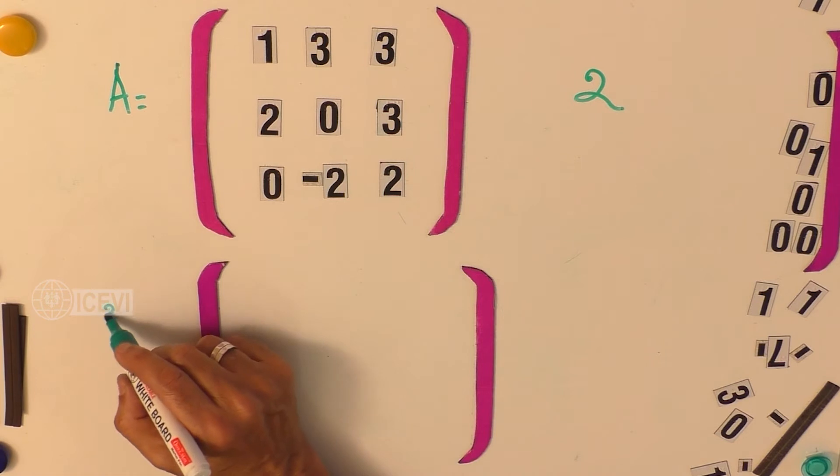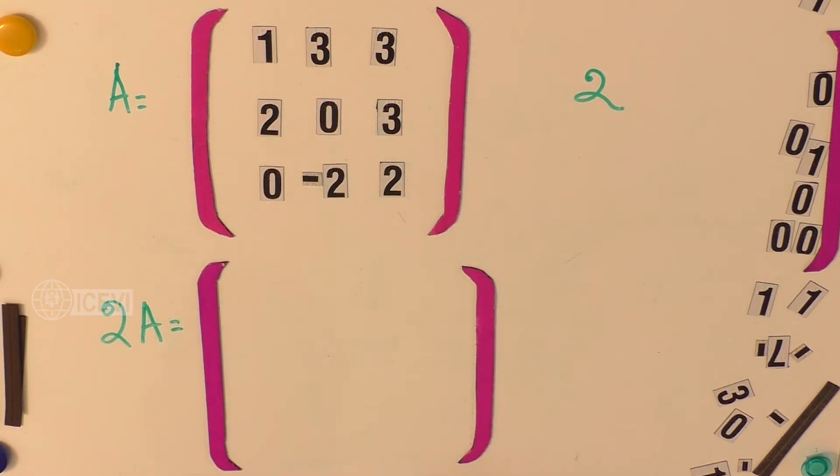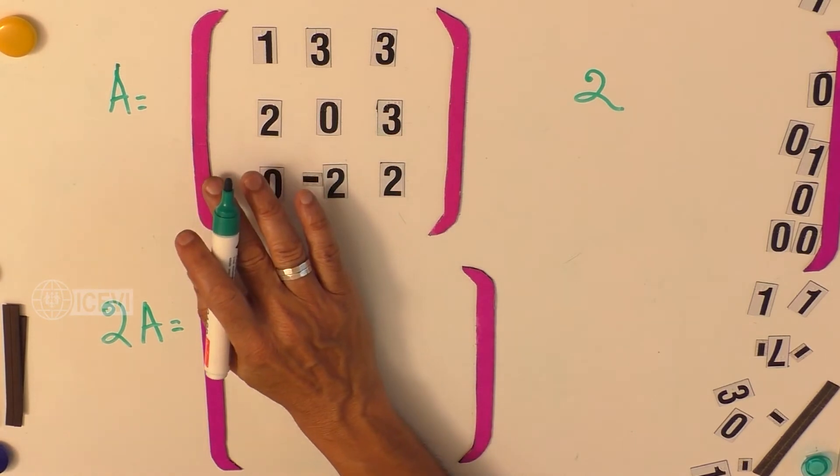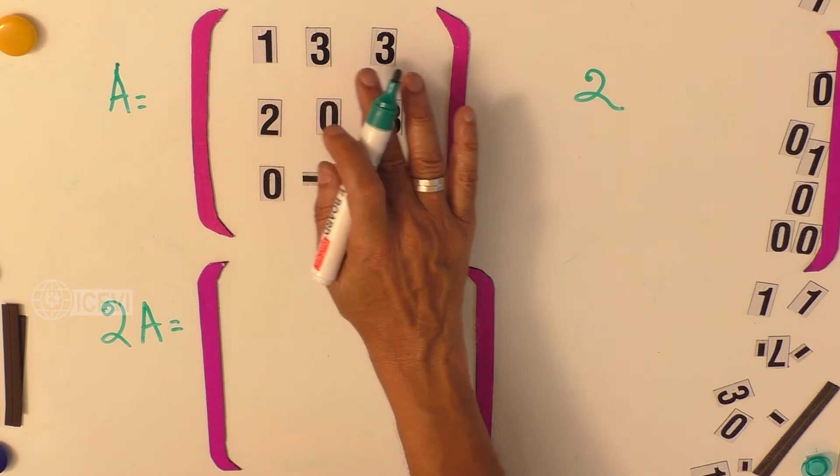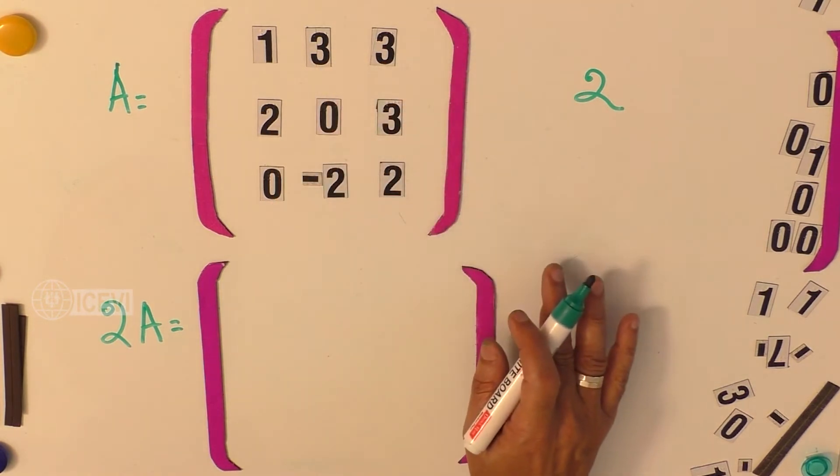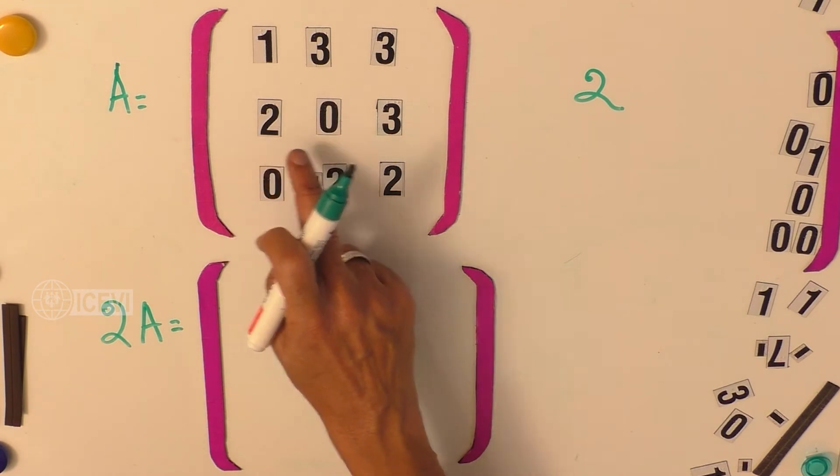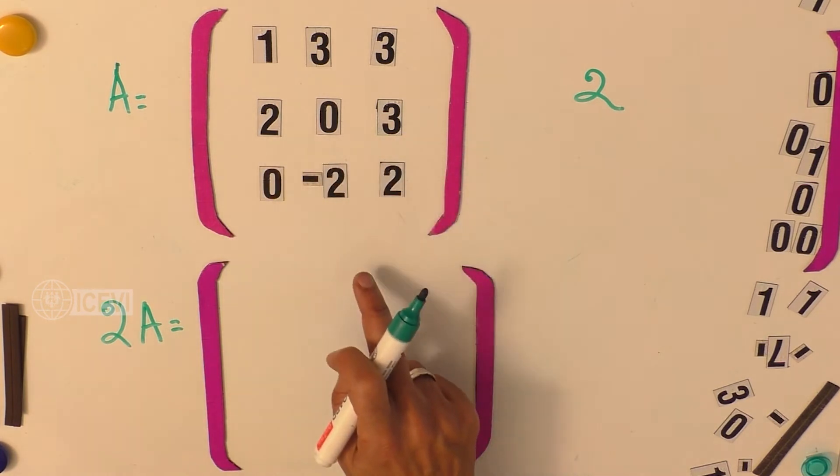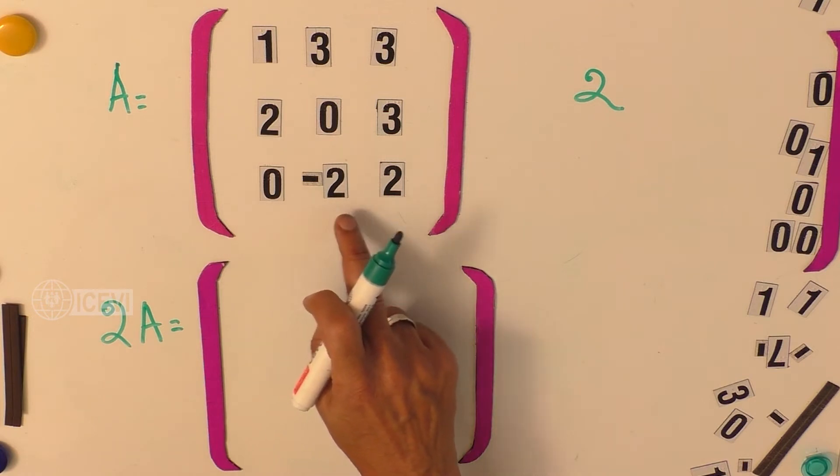That becomes 2A. What is the value of 2A? Here, A is a matrix which is 1, 3, 3 having the first row elements, and the row 2 as 2, 0, 3, and the row 3 as 0, minus 2, and 2.